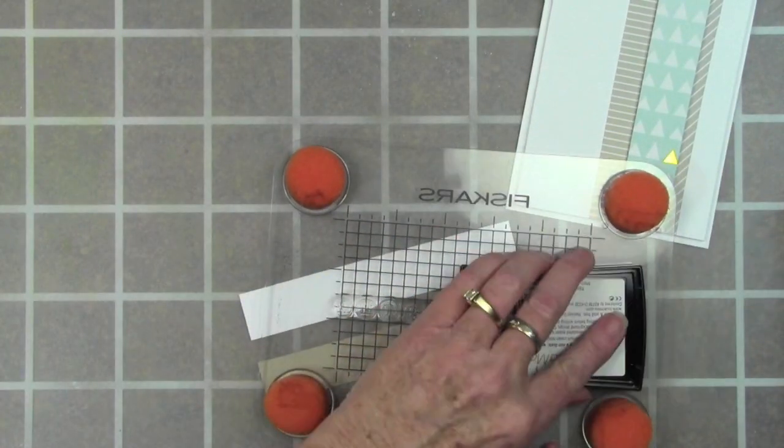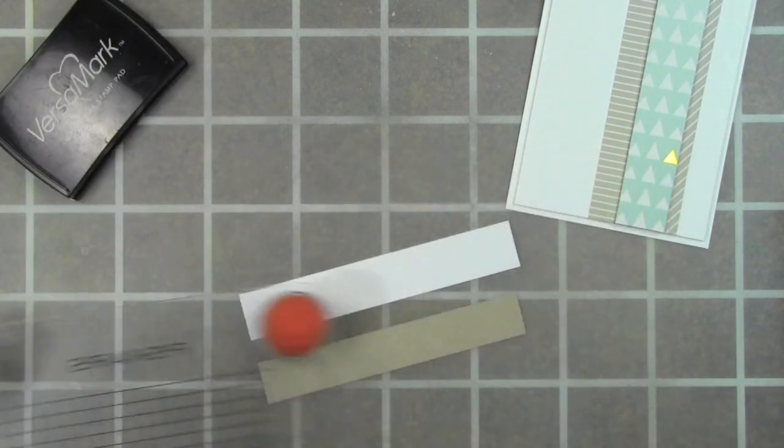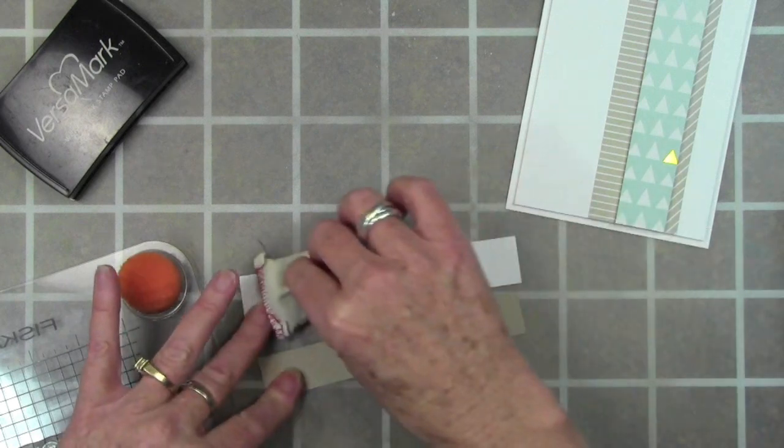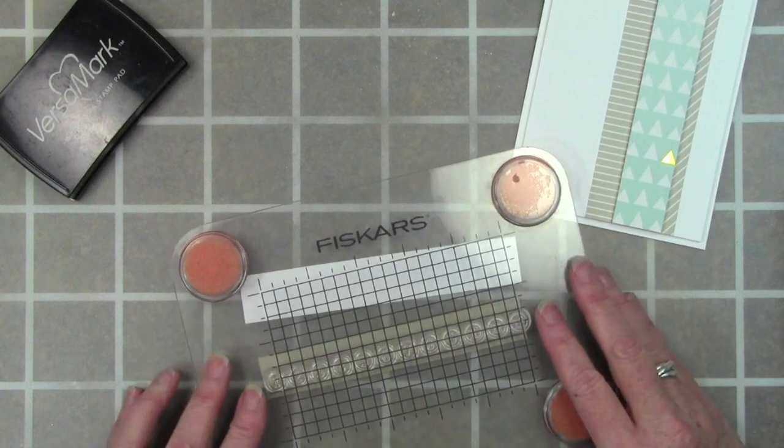I've mounted my numbers onto my stamp press and I'm just going to ink these up with some VersaMark ink. Now I can use my anti-static bag a little bit on my strips and go ahead and stamp onto my papers.